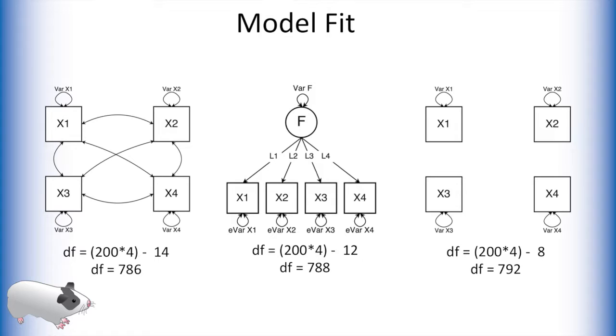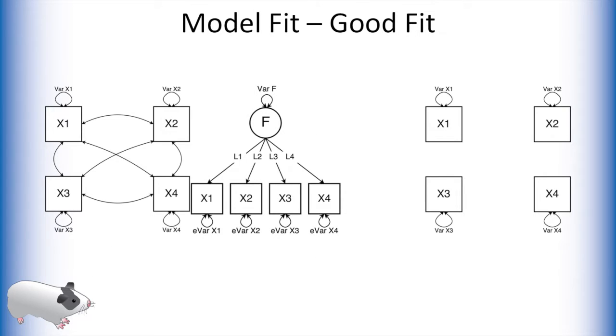On top of degrees of freedom differences, these models also differ in their mathematical likelihoods. Theoretically, the saturated model should have the best possible likelihood, and the independence model should have the worst. We use these as anchoring points for determining how well our model fits the data. The closer the likelihood of our factor model is to our saturated model, the better the fit.